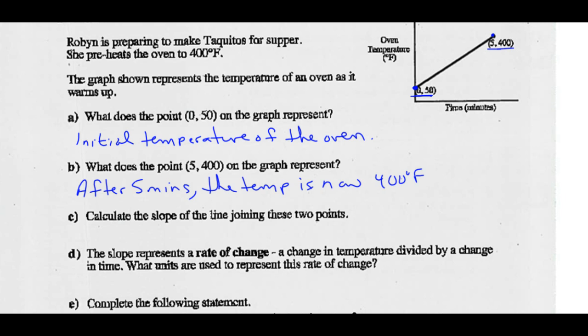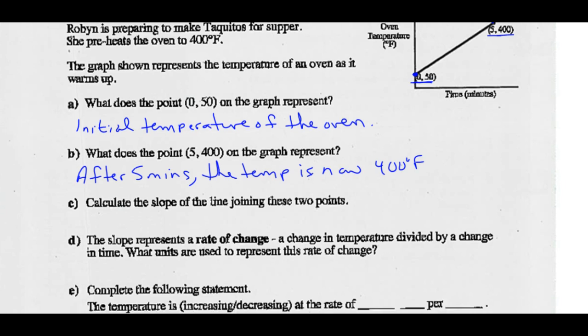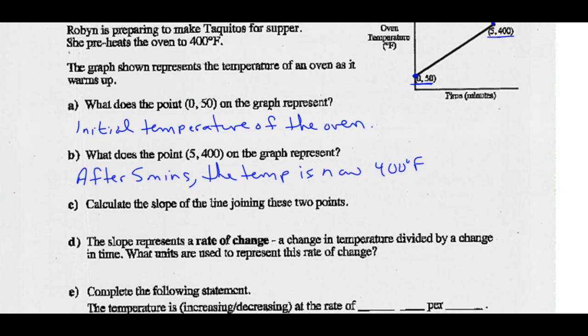Part C: Calculate the slope of the line joining these two points. The definition of slope is rise over run. So slope = (y2 - y1) / (x2 - x1) = (400 - 50) / (5 - 0), which gives us 350 over 5, or 70 over 1.